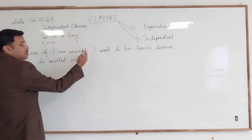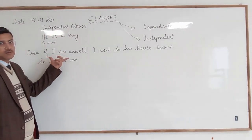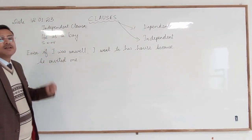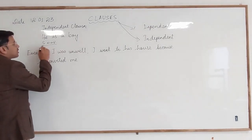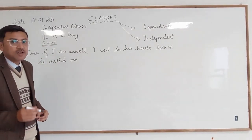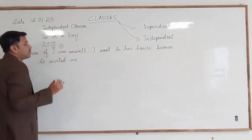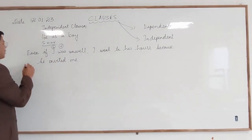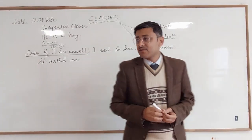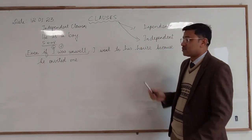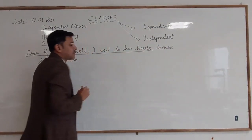Let us see this part of the sentence: 'Even if I was unwell.' Now, can you tell me — is it a clause or can it be an independent sentence? In order to find out, first we have to find the subject and verb combination. In this part, 'I' is the subject and 'was' is the verb of the sentence. So from here to here is actually one clause. The next part of the sentence, 'I went to his house,' is another clause.